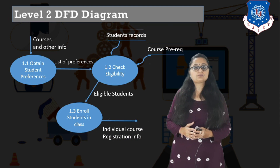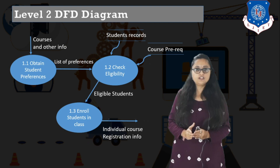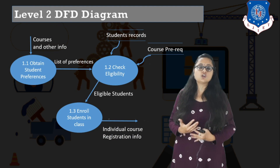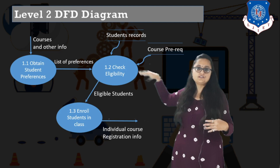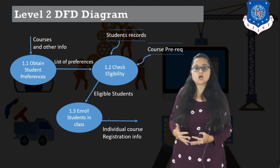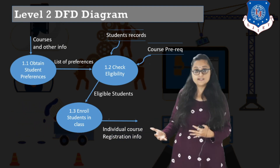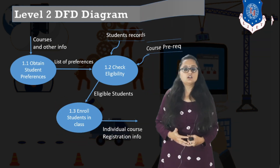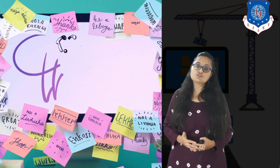In data flow diagram, you can see that only data flowing from one process to another is depicted. We have studied up to level two. Level three is possible but not recommended, as it becomes very complex to understand. Levels 0, 1, and 2 are the recommended DFD levels for your system. This was all about data flow diagram and today's lecture. Thank you.